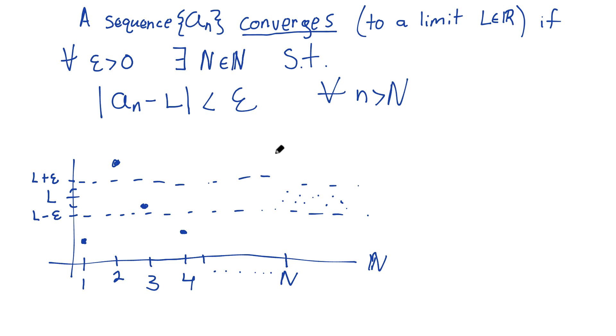Now, if a sequence is not convergent, if this doesn't happen, the sequence doesn't converge—we'll say the sequence diverges.